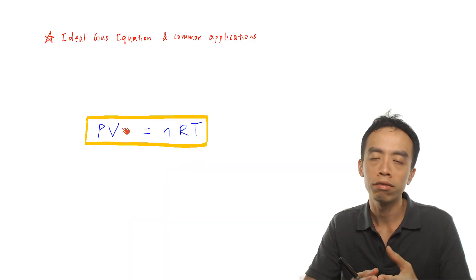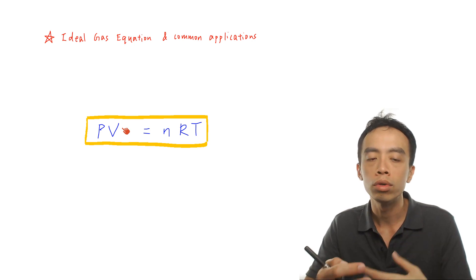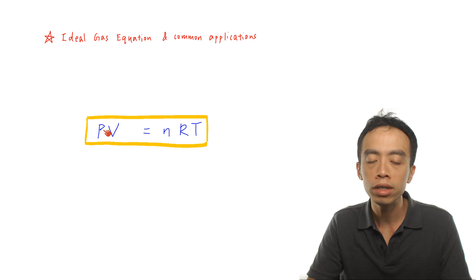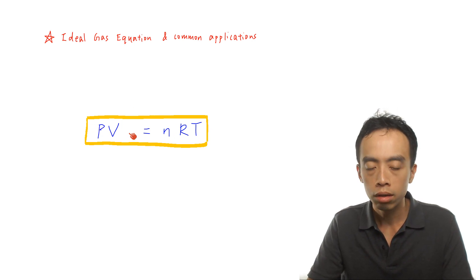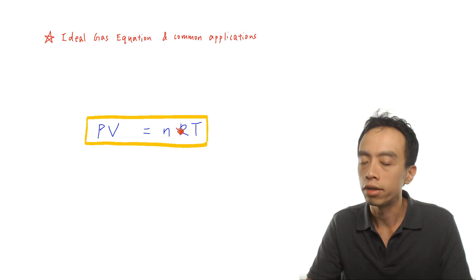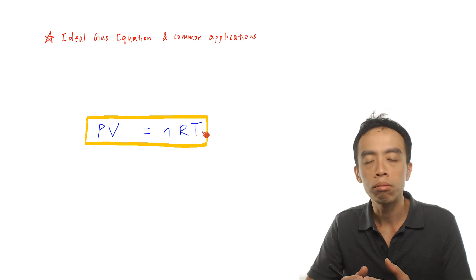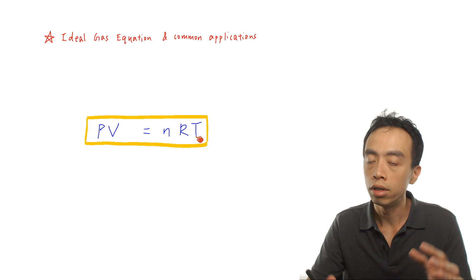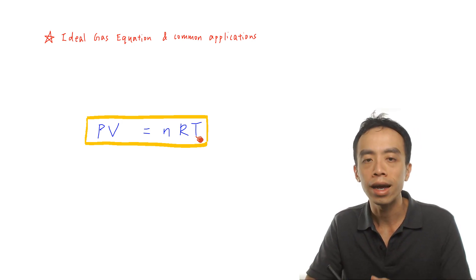The first thing we should do is look at the ideal gas equation and get ourselves familiar with it. Now the equation is actually fairly straightforward: PV equals to nRT. For using this ideal gas equation in this form, we must make sure that all the terms have to be in SI units.